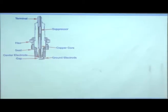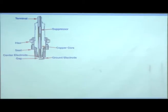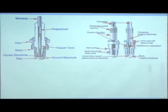The electrode material should be highly conducting, and there is also a provision to absorb thermal expansion because the engine will get heated. There are many types of electrodes and different metals used. The electrode gap is critical for proper spark generation.